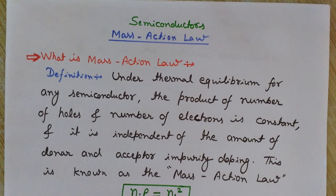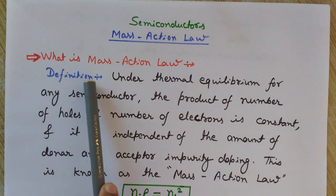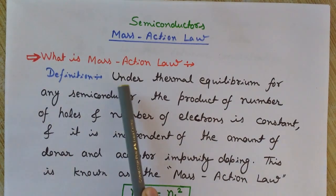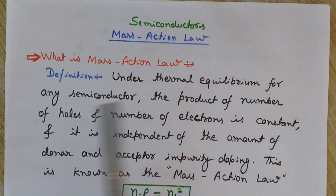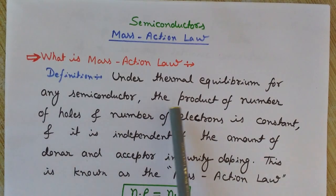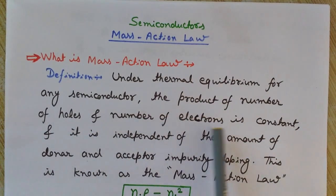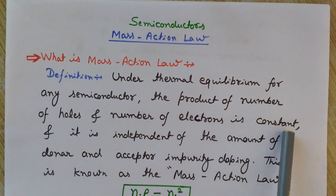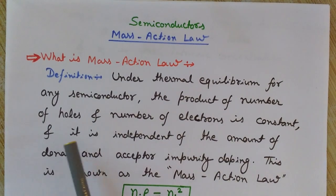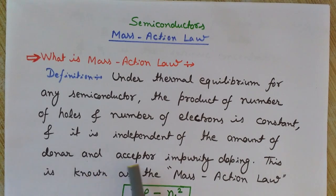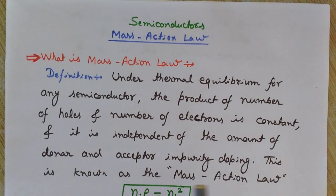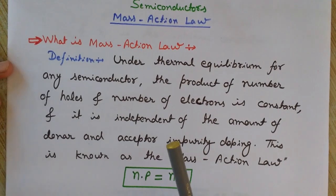Now let's see the statement of mass action law. Under thermal equilibrium, for any semiconductor, the product of the number of holes and the number of electrons is constant, and it is independent of the amount of donor and acceptor impurity doping. This is known as the mass action law.